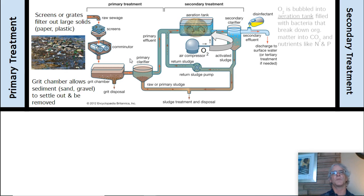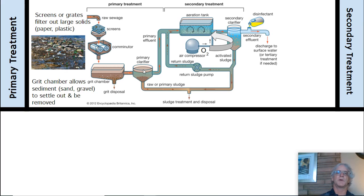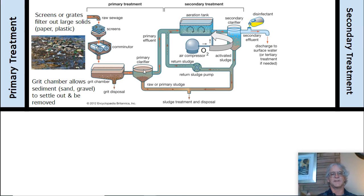Then the water goes through the primary clarifier. In the primary clarifier, they add chemicals that allow the sludge — the manure and particles — to settle down. In this large chamber, that material goes out the bottom.